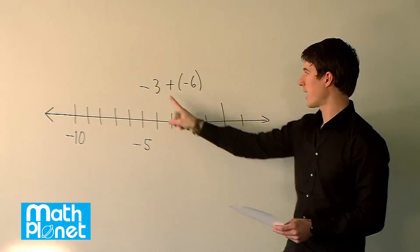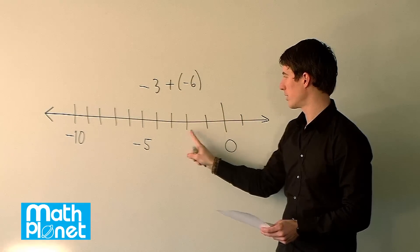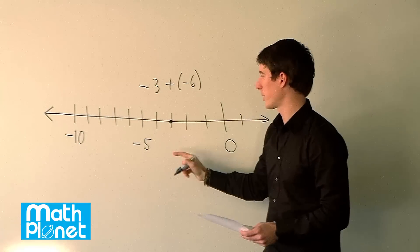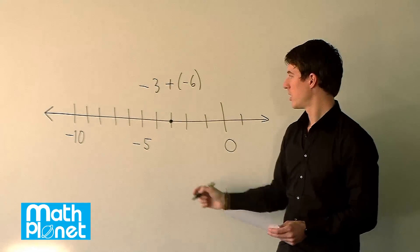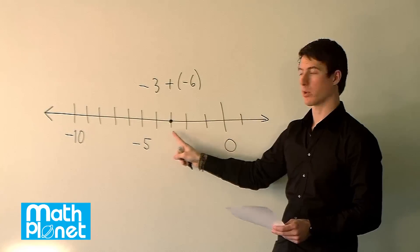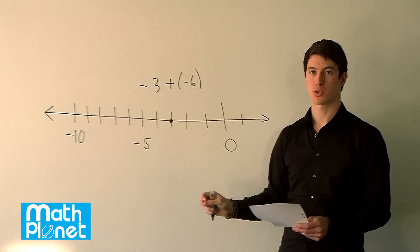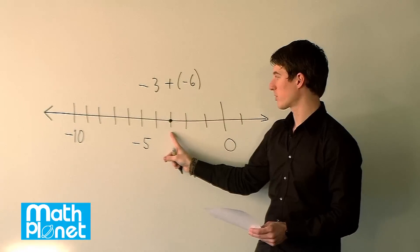So we begin at negative 3, so negative 1, 2, 3. We begin here, and we want to see what happens when we add negative 6 to that. If we added a positive number, we would go to the right, but when we add a negative number, it's the same as subtracting. So we add a negative number, so we go to the left.